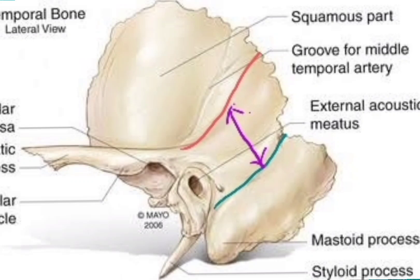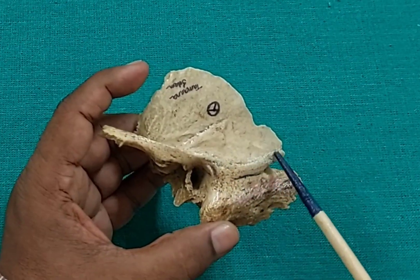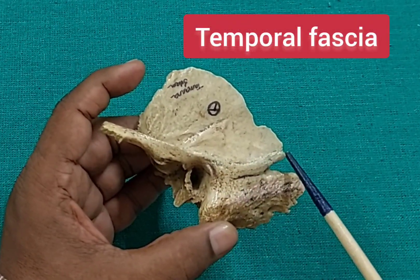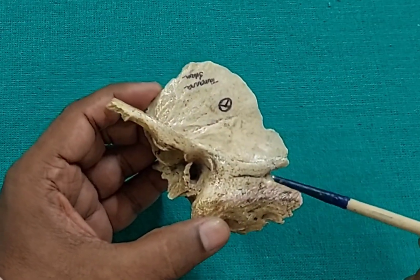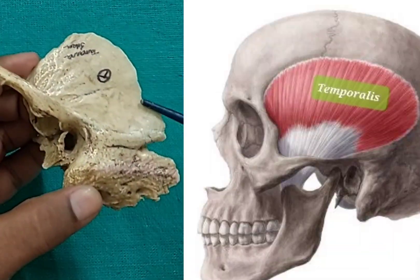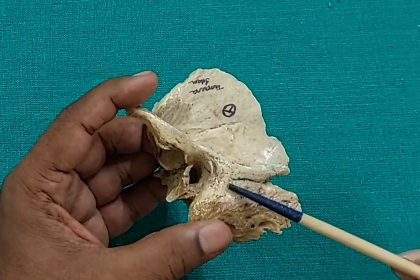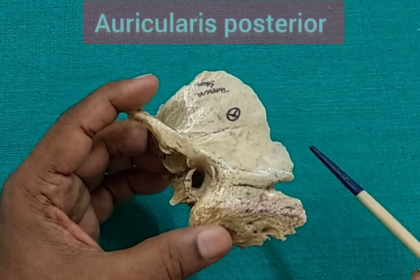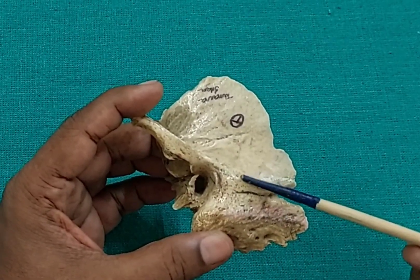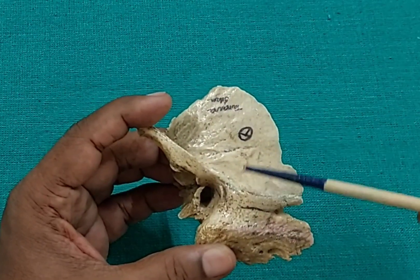This suture lies about 1.5 centimeters below and parallel to the supramastoid crest. What is the attachment of this supramastoid crest? The temporal fascia is attached along the line of the supramastoid crest. The area above this crest is the origin of the temporalis muscle, and the area below this crest is the origin of the auricularis posterior muscle.